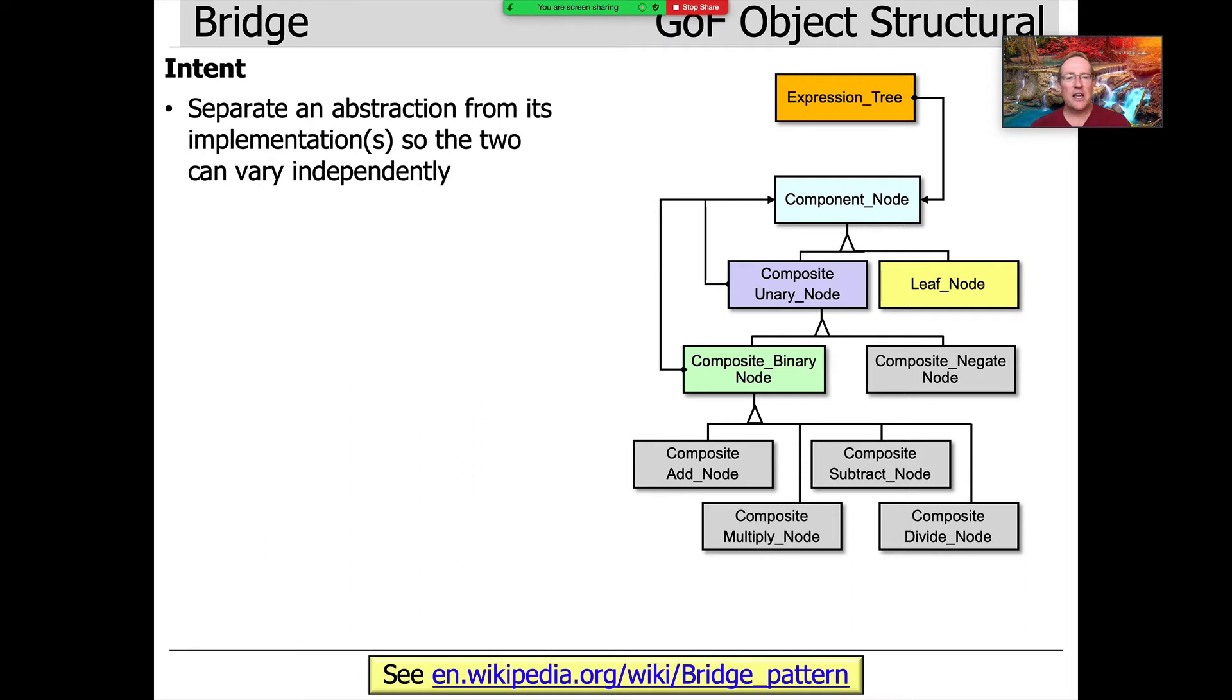And as you can see here, what the expression tree does in our case study is it encapsulates the composite. So expression tree is the abstraction role from the bridge pattern that's used to separate that interface from the implementations that are provided by the composite.